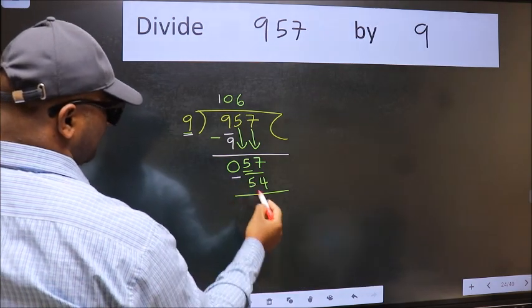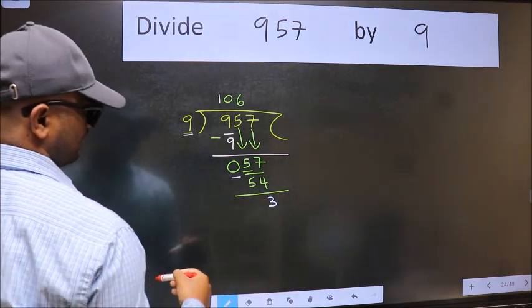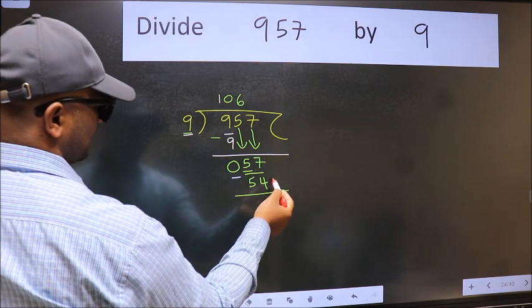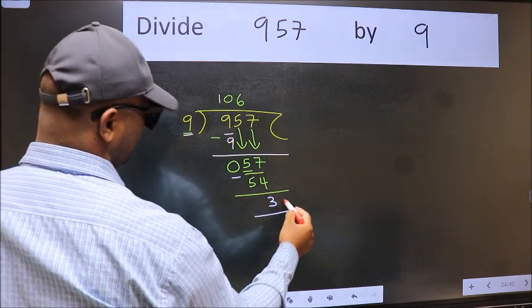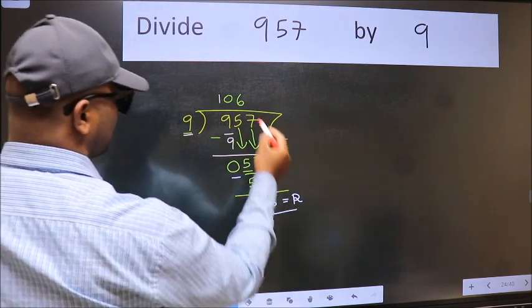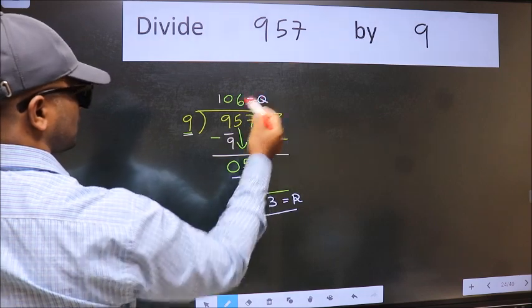Now we should subtract. We get 3. No more numbers to bring it down. So we stop here. This is our remainder and this is our quotient.